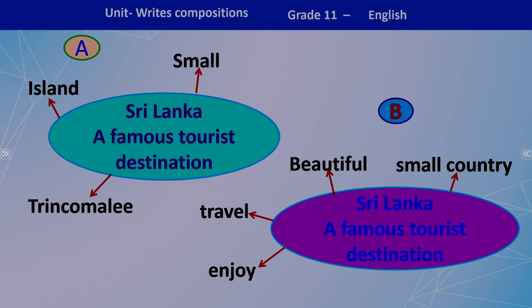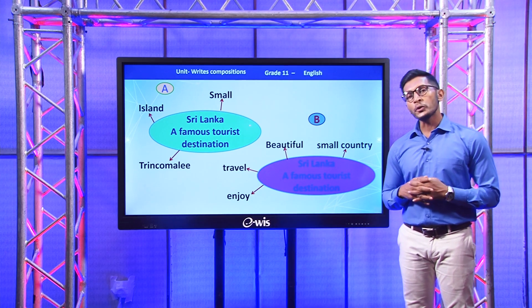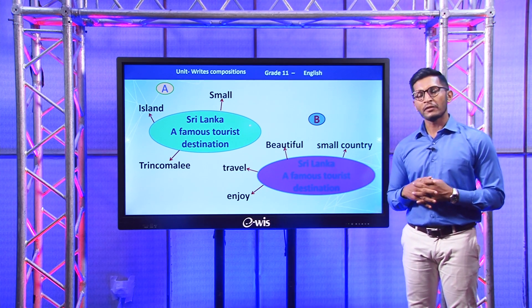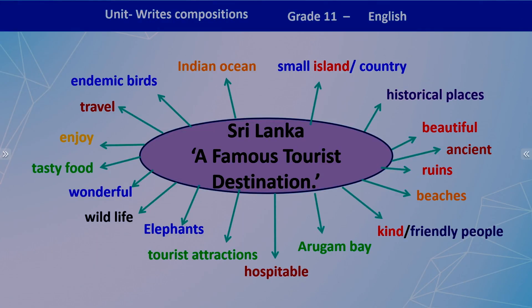Look at this example — these are sample mind maps. You can start like this: here is 'small island,' here is 'Trincomalee.' In another example we have 'beautiful small country, travel and enjoy.' I hope you have completed your mind map. Now I'm going to show you a mind map in the next slide. There I have included some of the words and phrases you might have written. Sri Lanka, a famous tourist destination: small island or country, historical places, beautiful, ancient, ruins, beaches, kind or friendly people, Arugam Bay, hospitable, tourist attractions, elephants, wildlife, wonderful, tasty food, enjoy, travel, endemic birds, Indian Ocean.